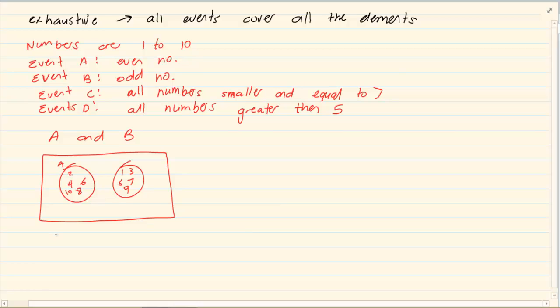Exhaustive says that if I take the P of A or B, it must equal to 1. Now you know from previous work that the formula for P of A or B is equal to P of A plus P of B minus P of A and B.